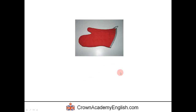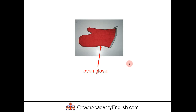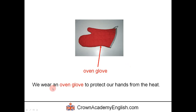This is called an oven glove. Sometimes in American English they call it an oven mitt — M-I-double-T. But in British English we call it an oven glove. We wear an oven glove to protect our hands from the heat, for example when we put something in the oven.